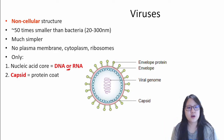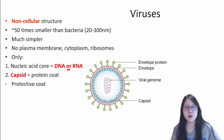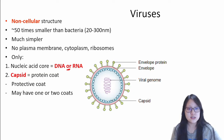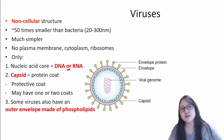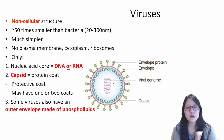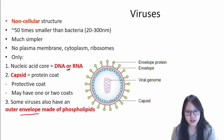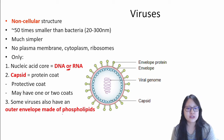Number 2: there's a capsid, or protein coat, around the nucleic acid core. The capsid is mainly a protective coat. Some viruses have one coat, some viruses have two coats. Number 3: besides the nucleic acid core and the capsid, outside that they have an outer envelope — we call it the viral envelope — and it's made of phospholipids.